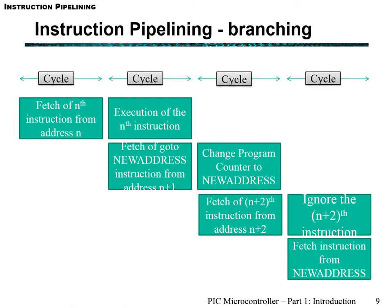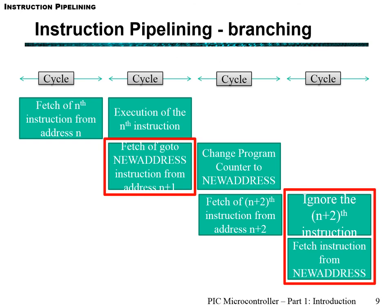The exception to the one-cycle rule is when the program branches. We still have parallelizing — fetch occurring at the same time as execution — however we are fetching a 'go to new address' instruction, which is what we call branching. In this case we change the program counter to the new address, which discards the simultaneously fetched instruction. That is why branching takes two cycles.